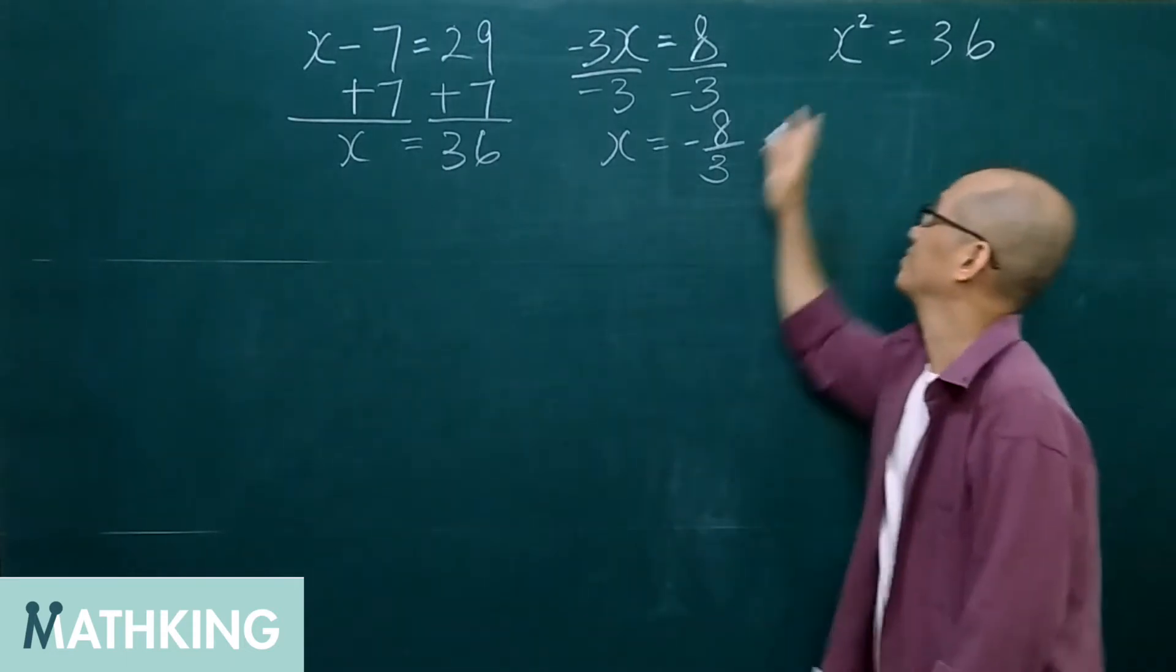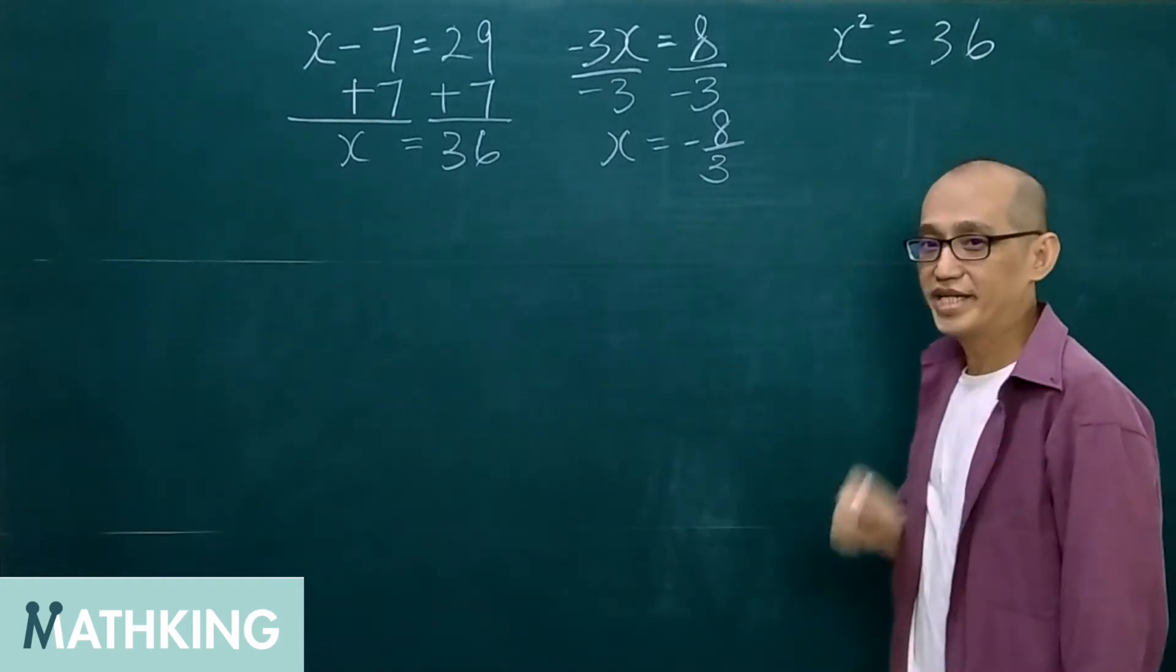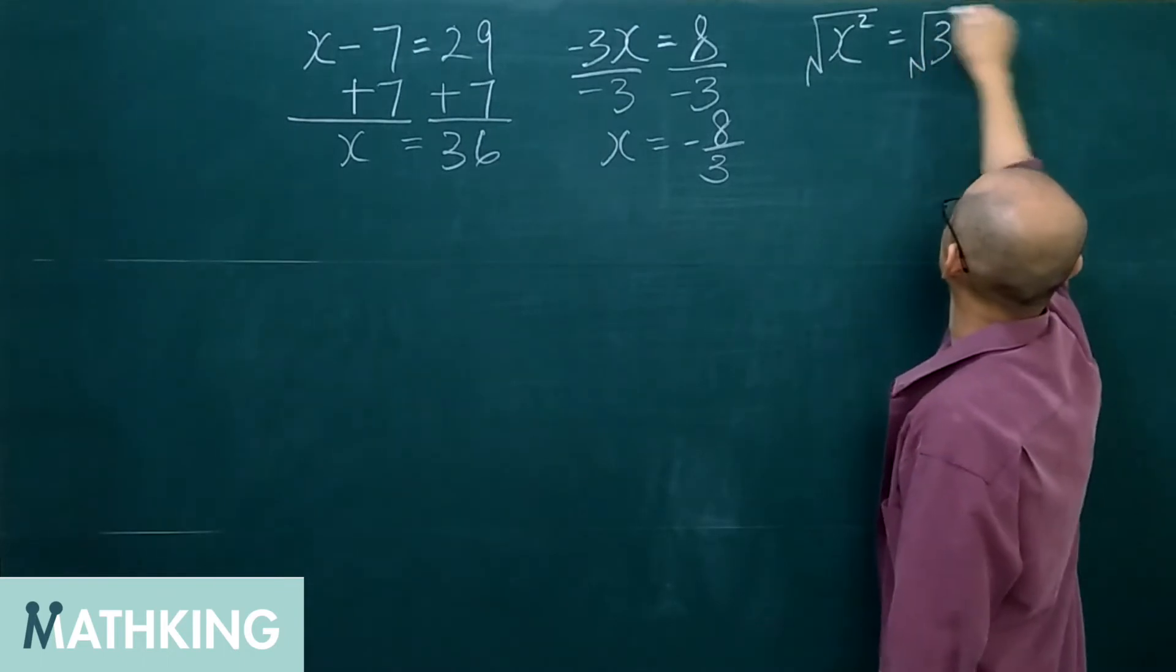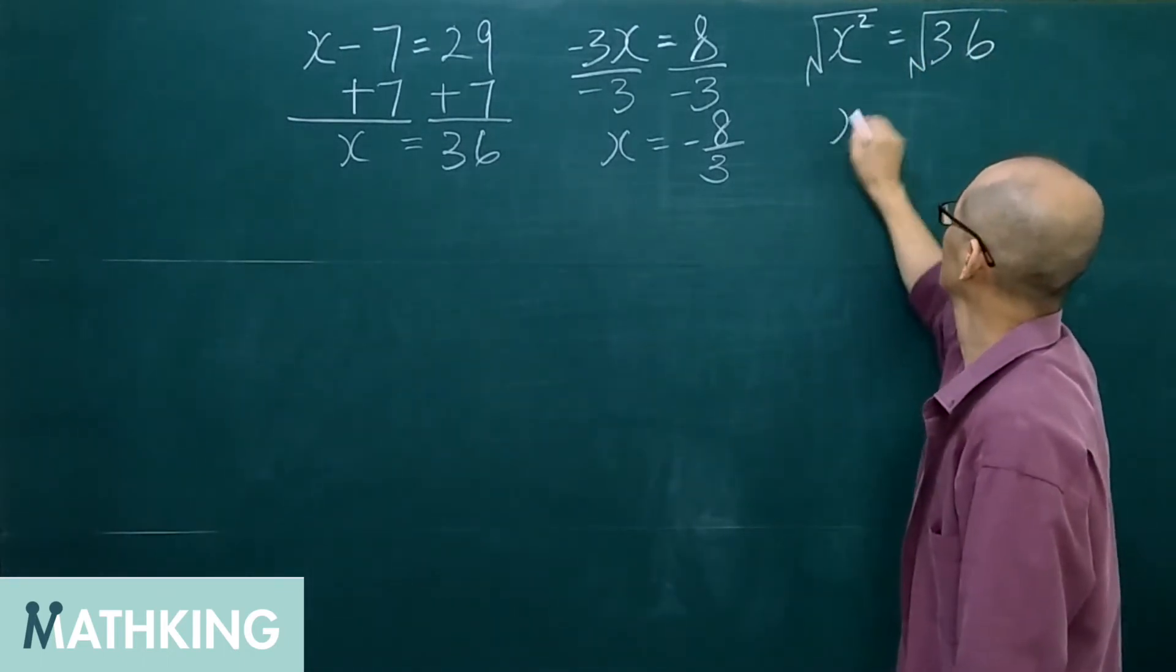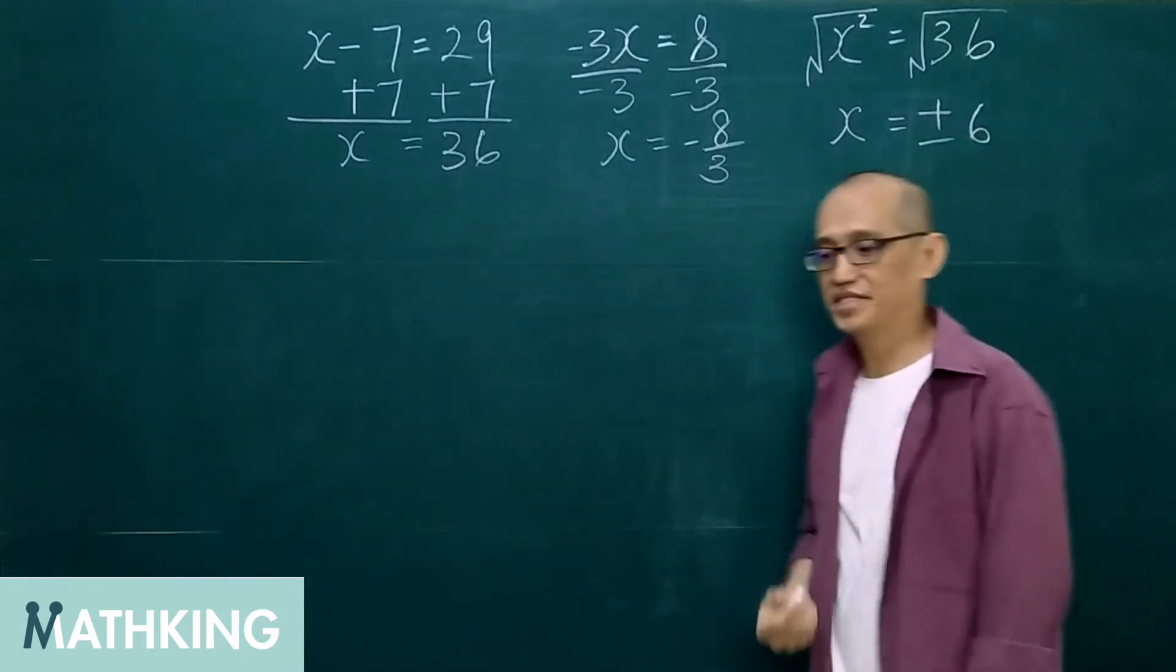Even for this one, which is not a linear equation, we can take the square root of both sides. And we will get x equals plus or minus 6.